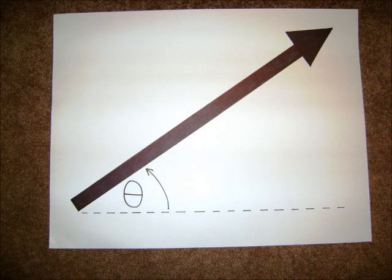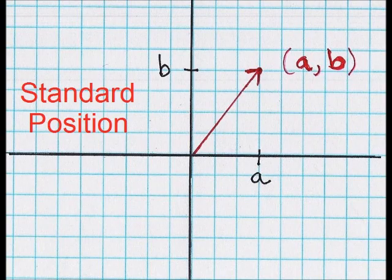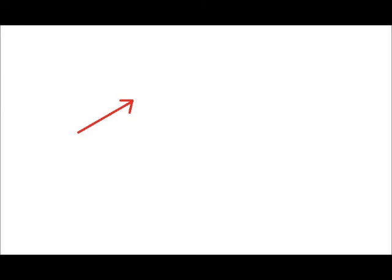A vector is a directed line segment. Use an arrow to show the way it went. Its length is called its norm. Standard positions when it's drawn, emanating from the origin. An arrow has a fixed position, a single photograph.